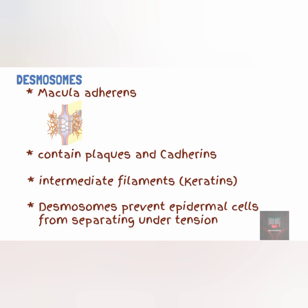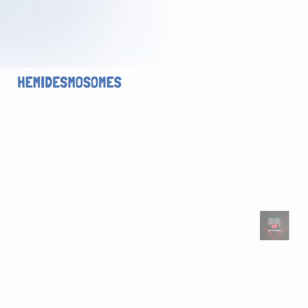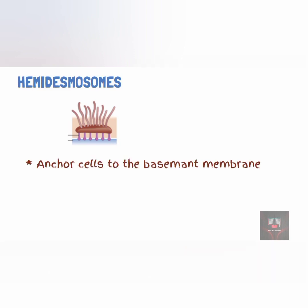Desmosomes present in the epidermis of the skin prevent them from separating under tension. Hemidesmosomes also resemble desmosomes; however, they do not link adjacent cells together, but rather link a cell to the underlying connective tissue referred to as the basement membrane. Their name arises from the fact that they look like half of a desmosome. Transmembrane proteins in hemidesmosomes are integrins rather than cadherins, and they attach to intermediate filament keratins in the cell and laminins in the basement membrane.